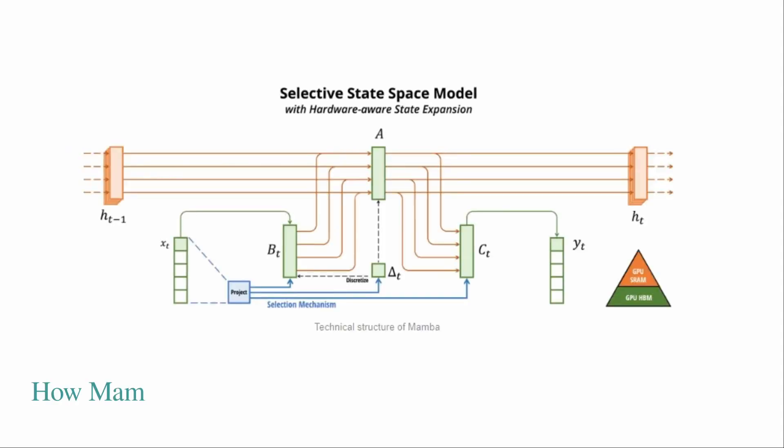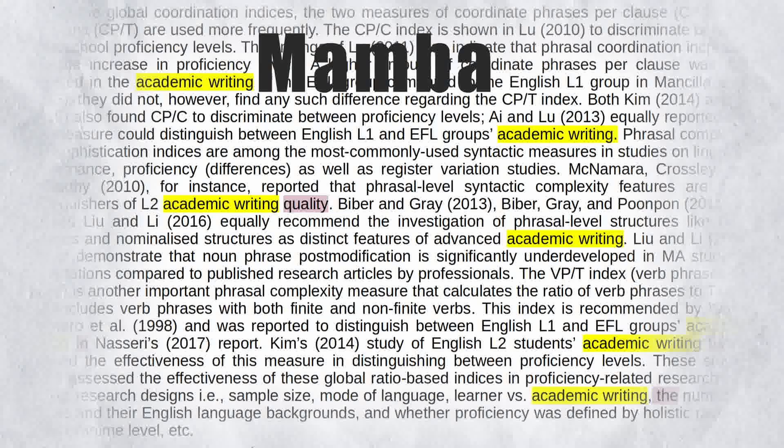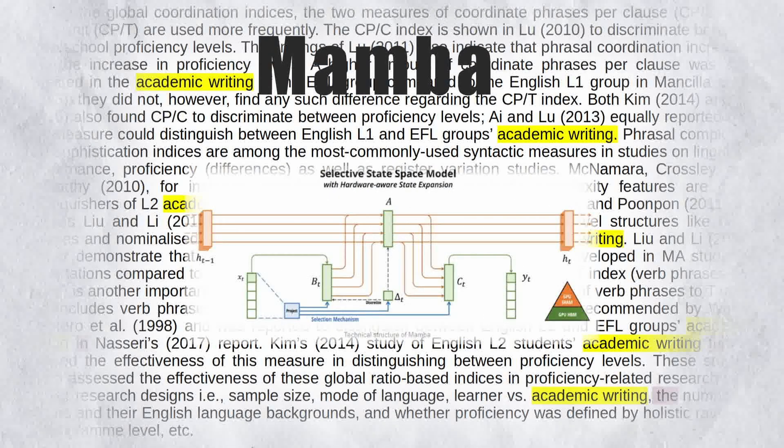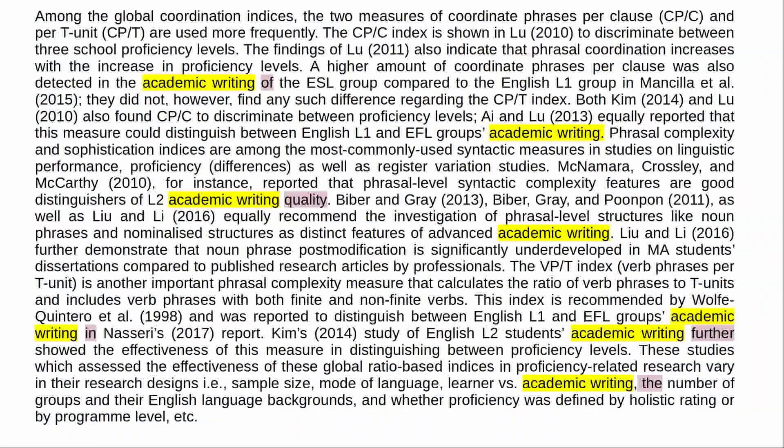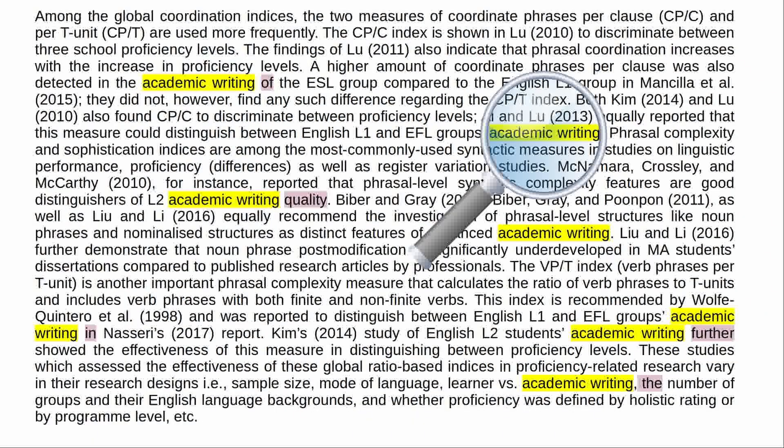In this video I show you how Mamba's AI architecture uses the selective state space model to figure out which parts of the data, for example which words in a word sequence, are connected and how they might affect what happens next, for example to predict which word comes next.